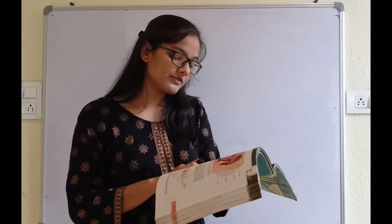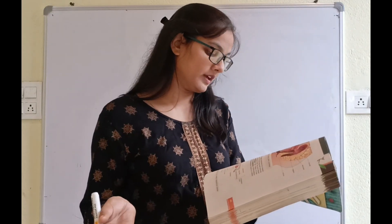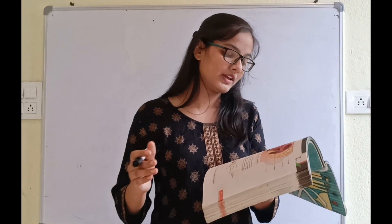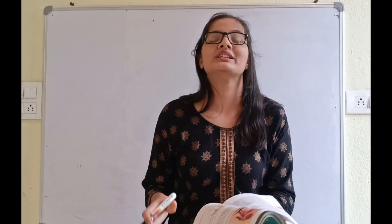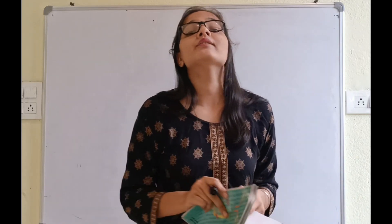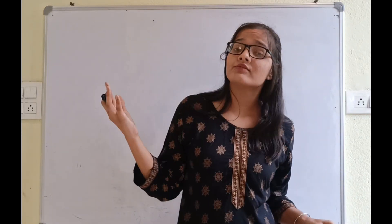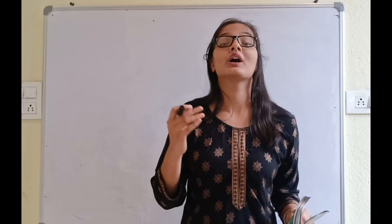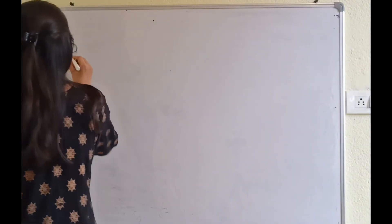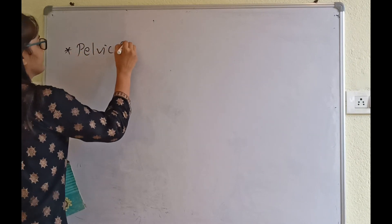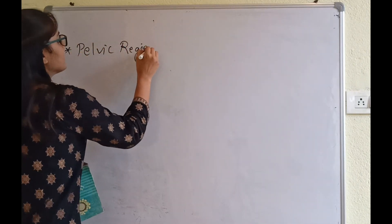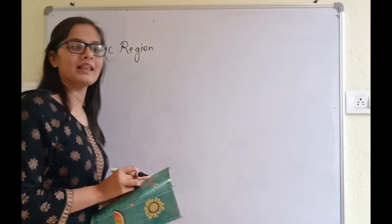The female reproductive system consists of a pair of ovaries, along with a pair of oviducts, uterus, cervix, vagina, and external genitalia, which are located in the pelvic region. Whether it is the male reproductive system or female reproductive system, where are they located? That is the pelvic region.